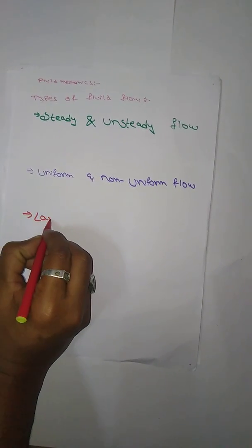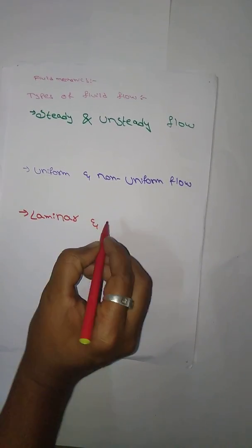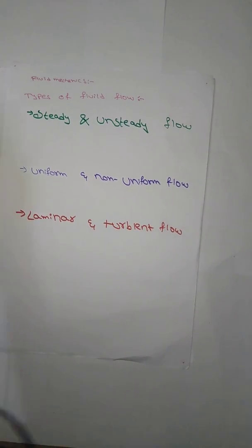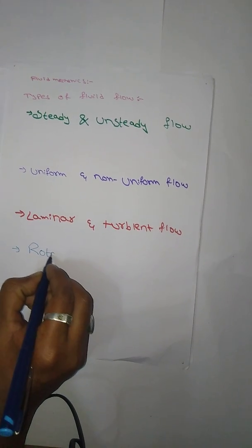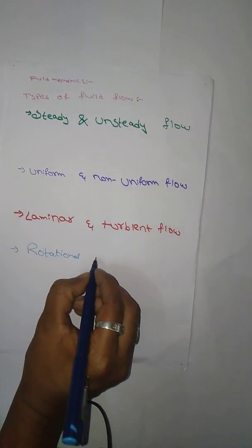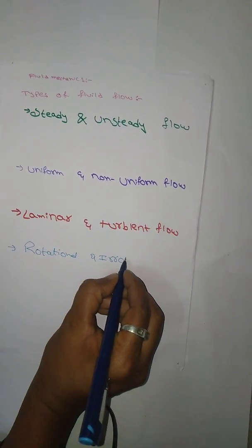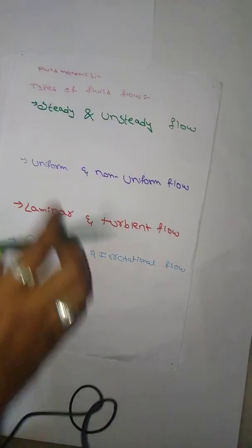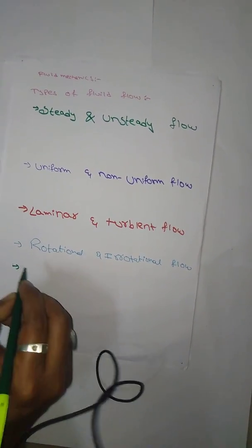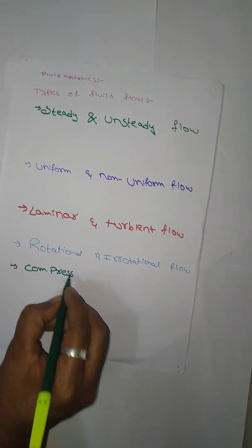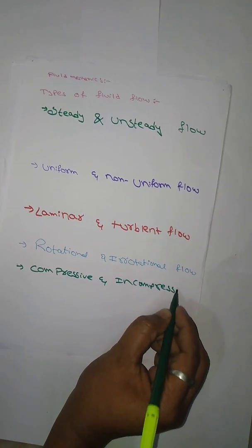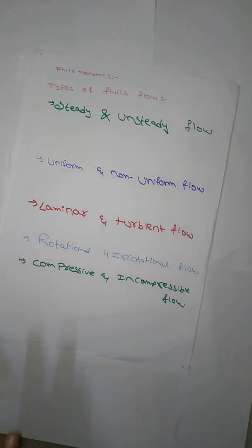Uniform and non-uniform flow. And next, laminar and turbulent flow — I will explain some flows only. Rotational and irrotational. And last, compressible and incompressible. I will write it. So, 5 flows — but now we have 10 flows.